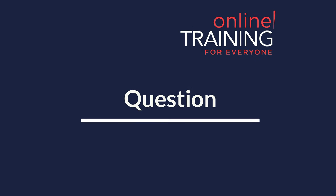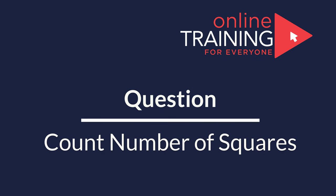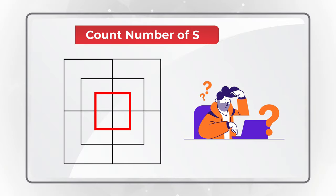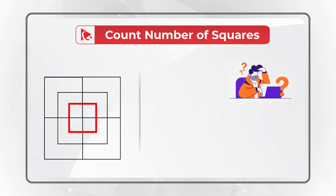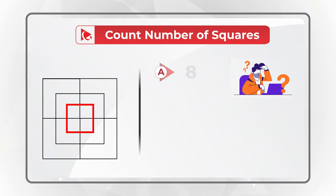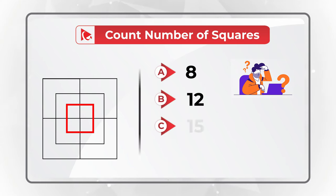Here's one of my favorite questions where you need to count the number of squares presented in the shape. You have four different choices: Choice A, 8. Choice B, 12. Choice C, 15 squares. And choice D, 18 squares.